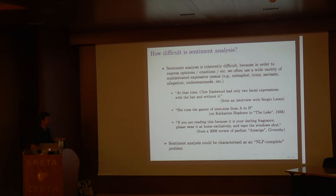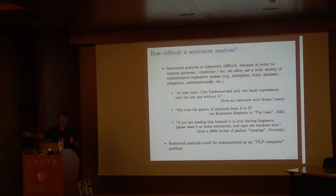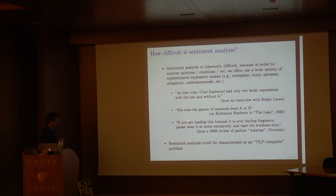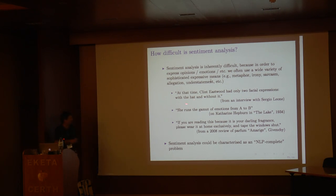'She runs the gamut of emotions from A to B.' Usually people say she can express all emotions from A to Z, but from A to B means a very small range of emotions you can convey as an actor. Or a perfume review: 'please wear it at home exclusively and keep the window shut.' I challenge you to find at least one adjective which is emotionally or sentimentally charged here.